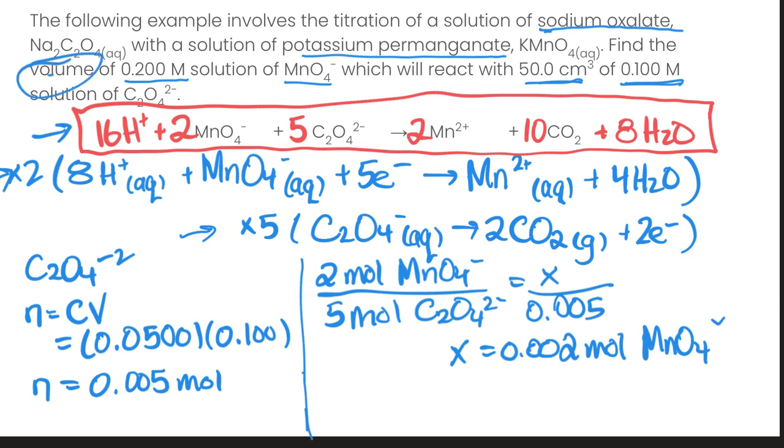And then final step, we need to solve for the volume and we have a concentration. So solving for volume, we're going to take the moles over the concentration, so 0.002 over 0.200.